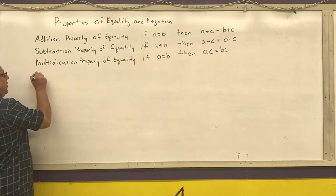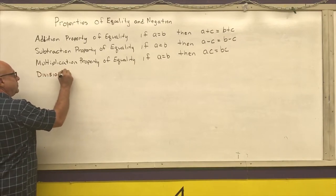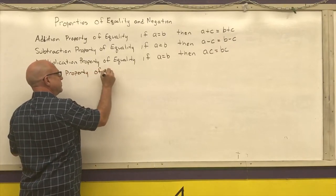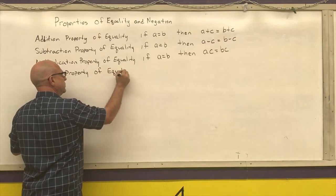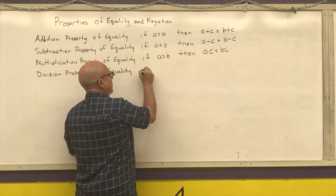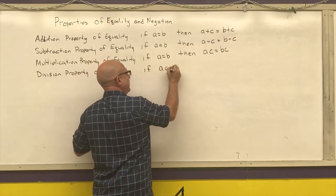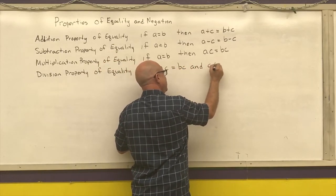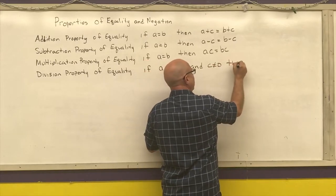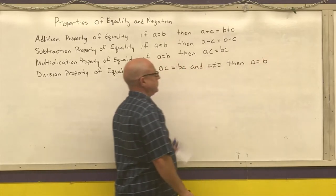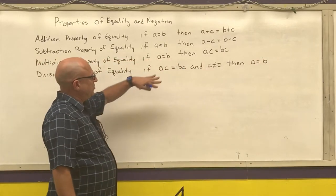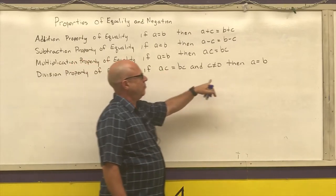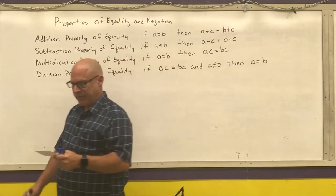And my division property of equality. If AC is equal to BC and C is not equal to zero, then A is equal to B. What this is stating is if I have two things that are equal and divide both sides by the same number, I will still get a true sentence out of it.